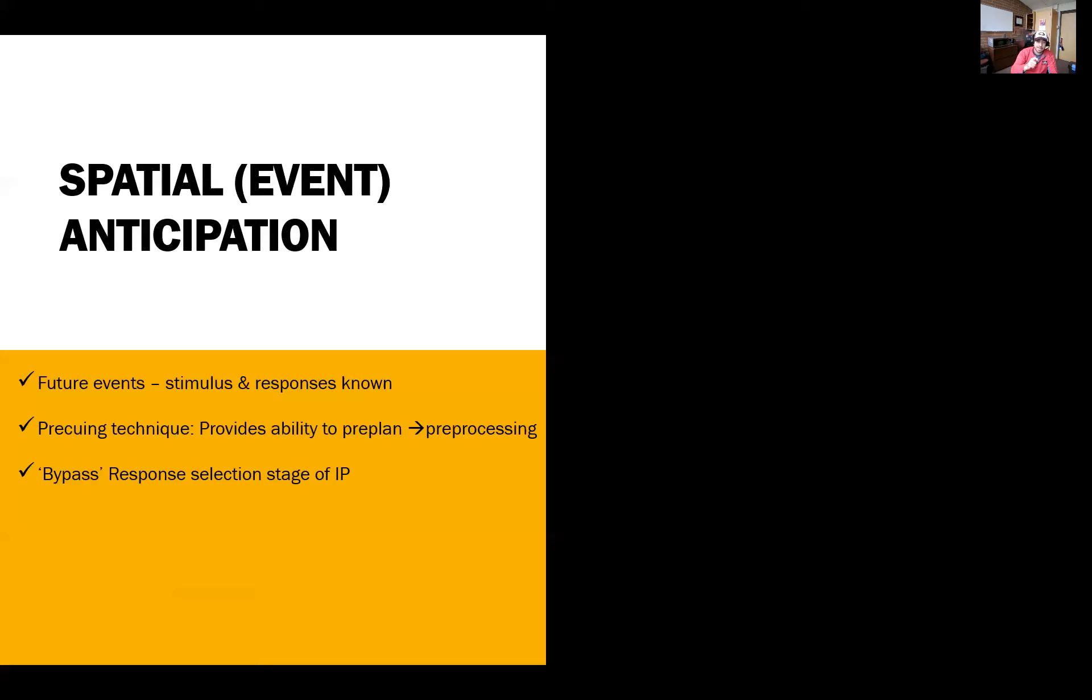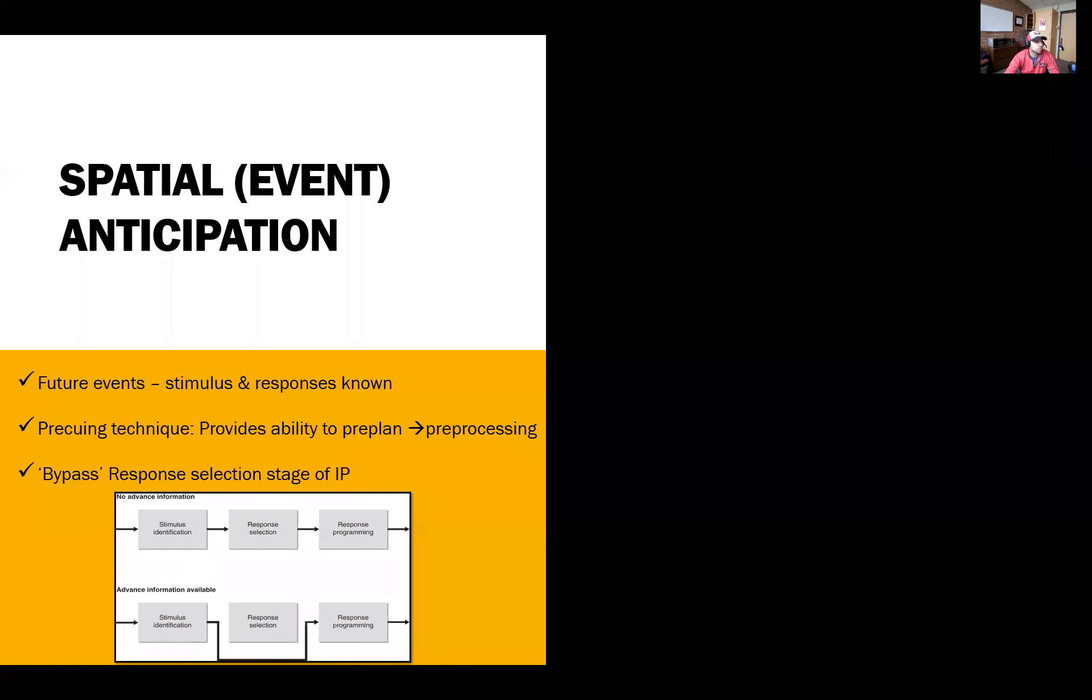Pre-cueing allows us to bypass that selection, that middle stage where we have to choose which response to make, and we're already in that programming stage. This speeds up the reaction time—I mean, reduces the amount of time taken in that reaction time period. Response selection is what is going to be removed or what individuals will be going around to make the reduction in reaction time.